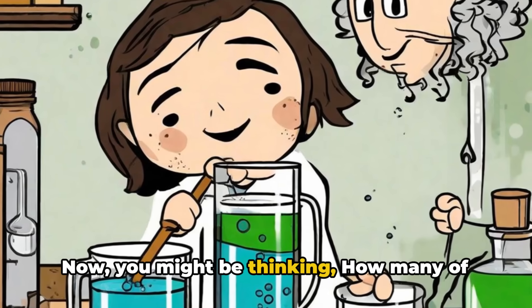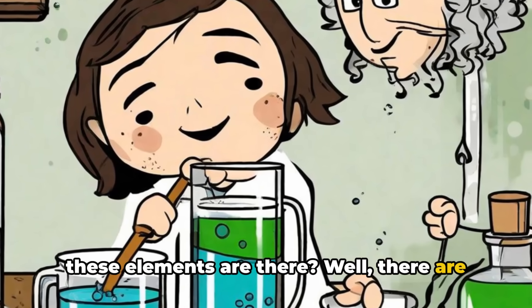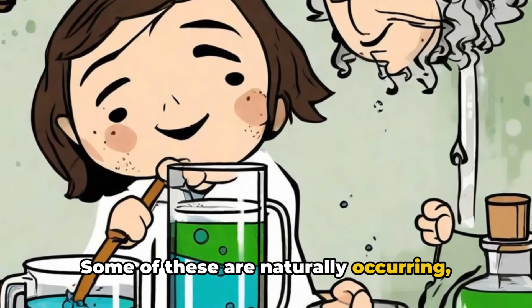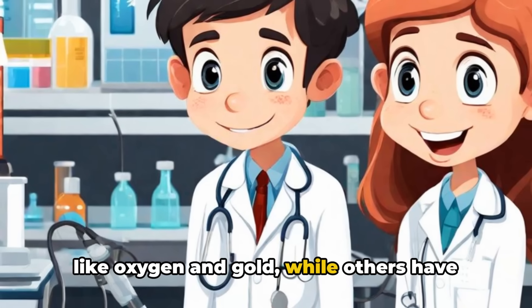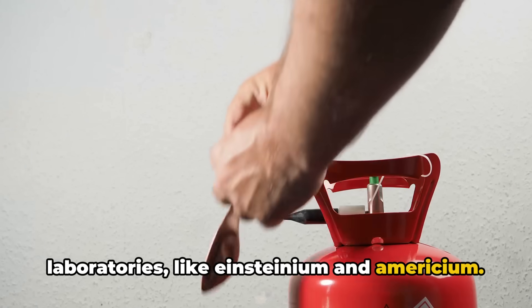Now you might be thinking, how many of these elements are there? Well, there are 118 known elements. Some of these are naturally occurring, like oxygen and gold, while others have been created by scientists in laboratories like Einsteinium and Americium.